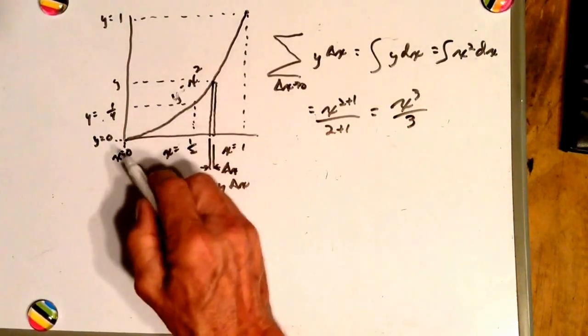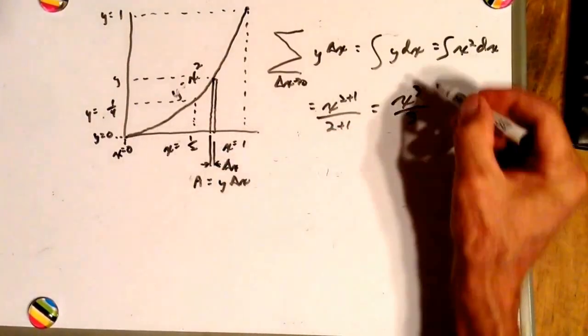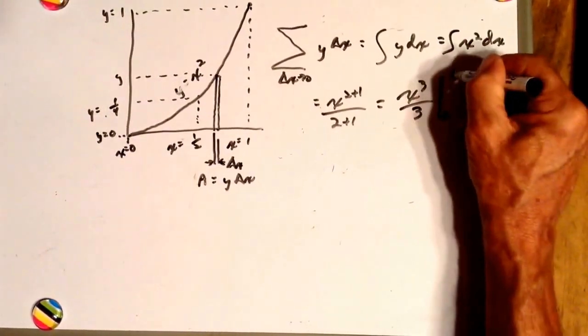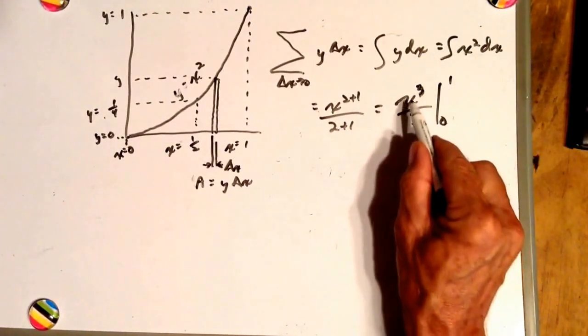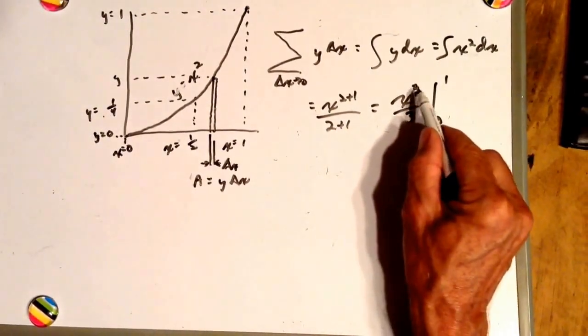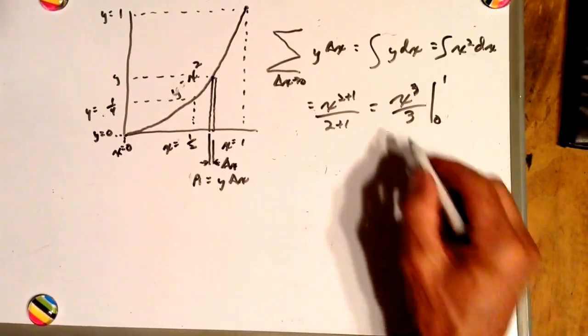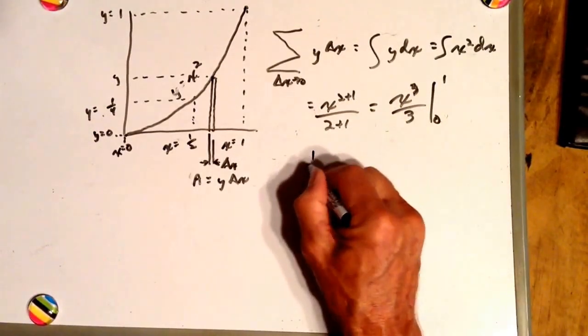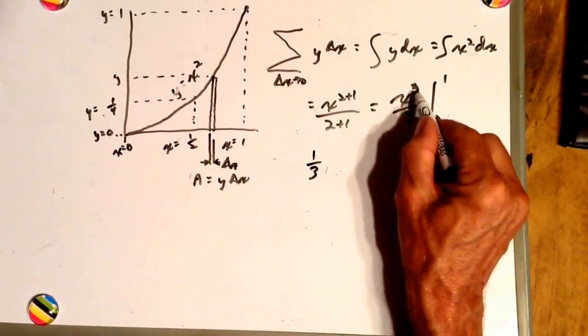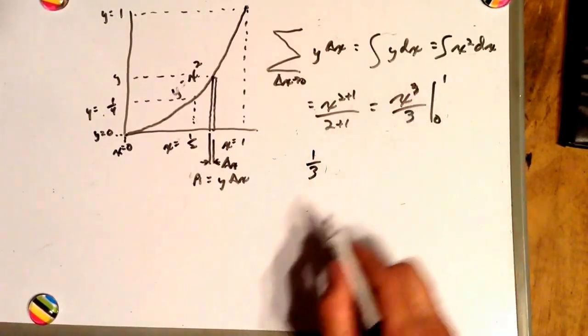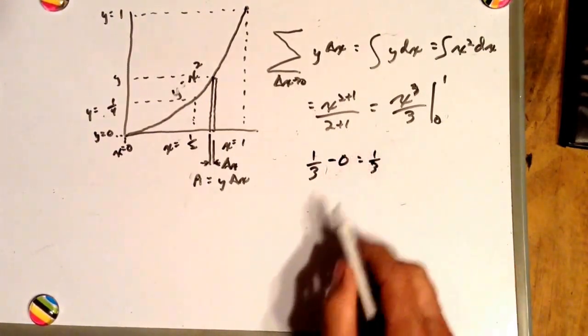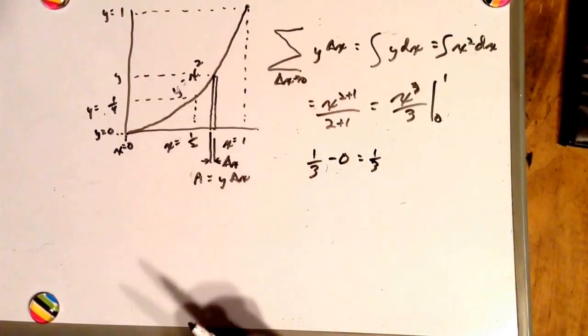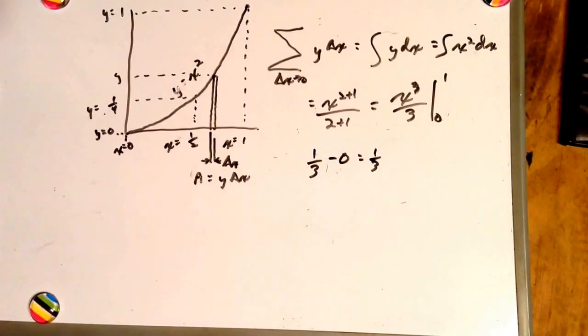And if our limits of integration are from 0 to 1, let's plug them in and see what we get. Let's plug 1 in for x. 1 times 1 times 1 is 1 cubed divided by 3 is 1 third. And then subtract 0 times 0 times 0 divided by 3. Minus 0 equals 1 third. That's the area underneath this curve.